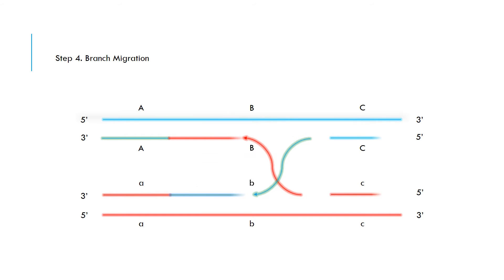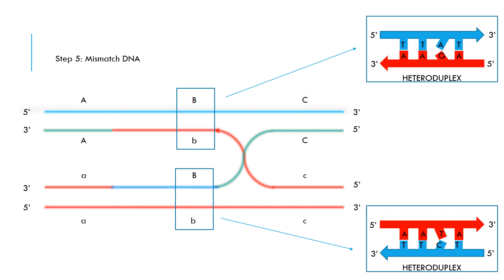Now, branch migration will occur. The base pairing is happening due to hydrogen bonding that encourages each pair of strands to join into a double-stranded DNA. A heteroduplex is now formed in the B region. This means there is a slight mismatch in gene B for both recessive and dominant genes. It must be repaired by an enzymatic correction system which will identify it, excise and replace it with a complementary base pair. This allows for genetic diversity.